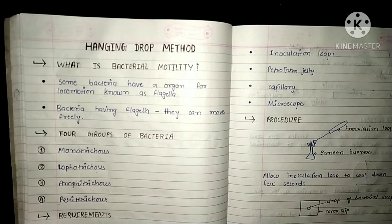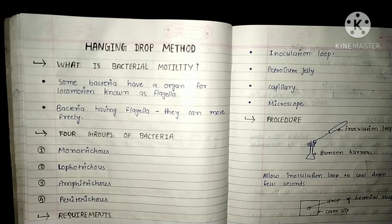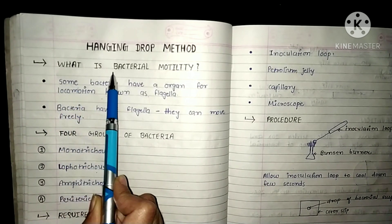Hello everyone, welcome to my channel Life Science Learners. In today's video we will learn about the hanging drop method. This is a very common method used in microbiology labs to determine bacterial motility. Before we discuss the hanging drop method, we will first learn some basics about bacterial motility.